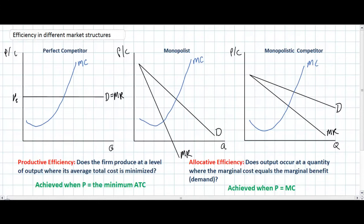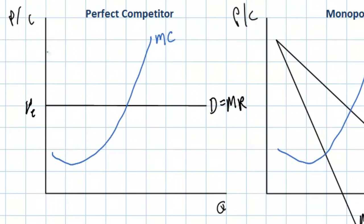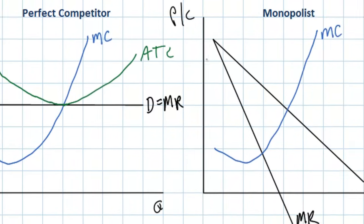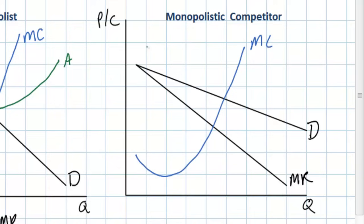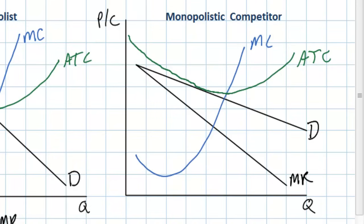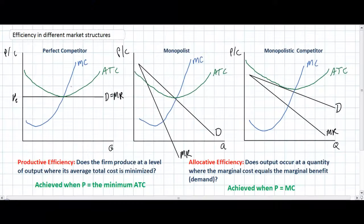We must also add our average total cost curves, showing each industry in long-run equilibrium. A perfect competitor in long-run equilibrium earns zero economic profits, producing where price equals average total cost. For the monopolistic competitor, firms break even in the long run, so average total cost will be tangent to the demand curve. Firms maximize profits by producing where MC equals MR, so we find that intersection to identify the equilibrium quantity — the perfectly competitive quantity QPC and the monopolist quantity QM.